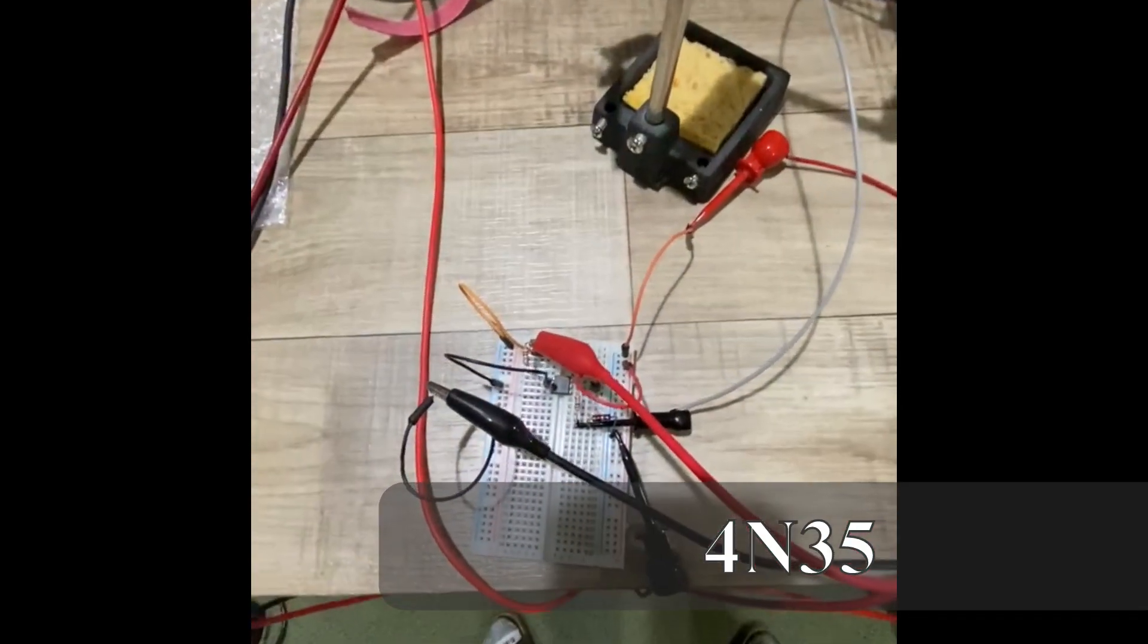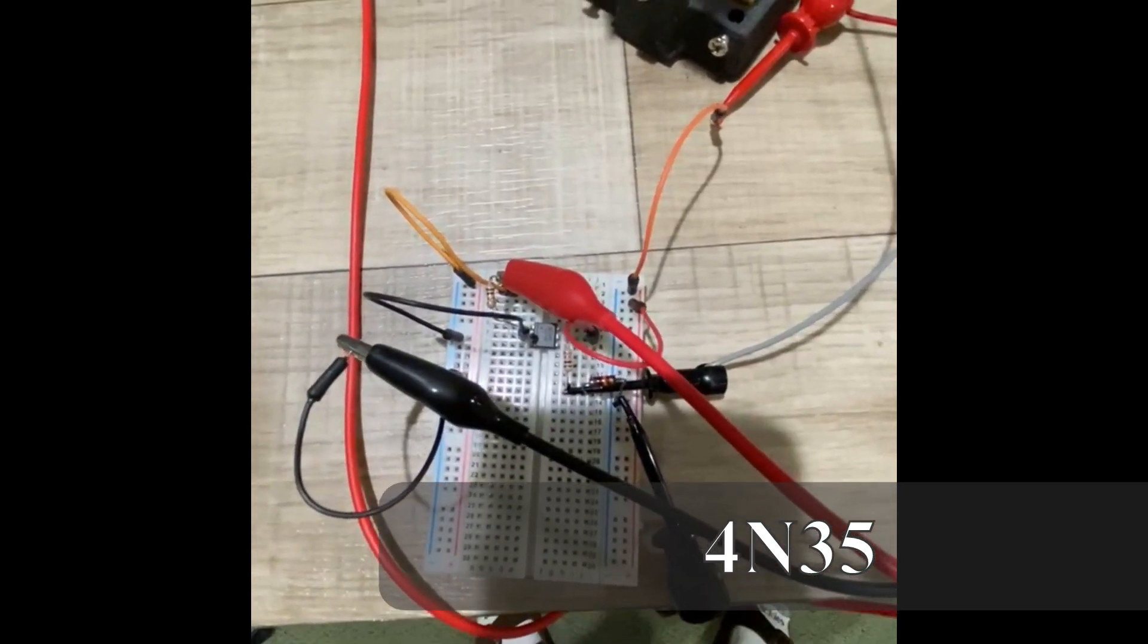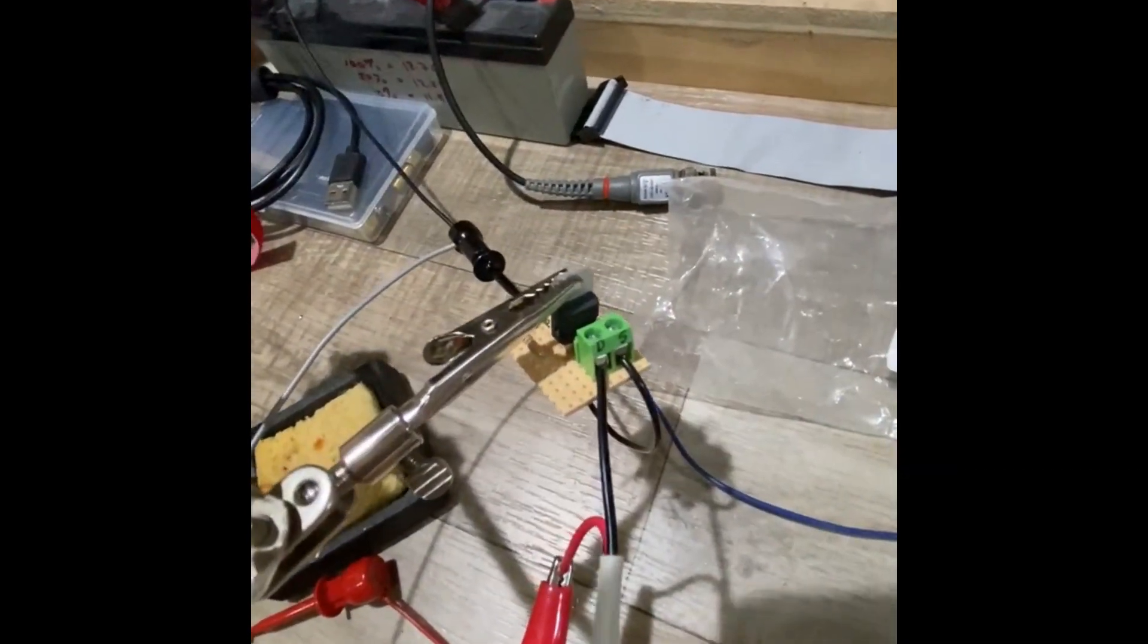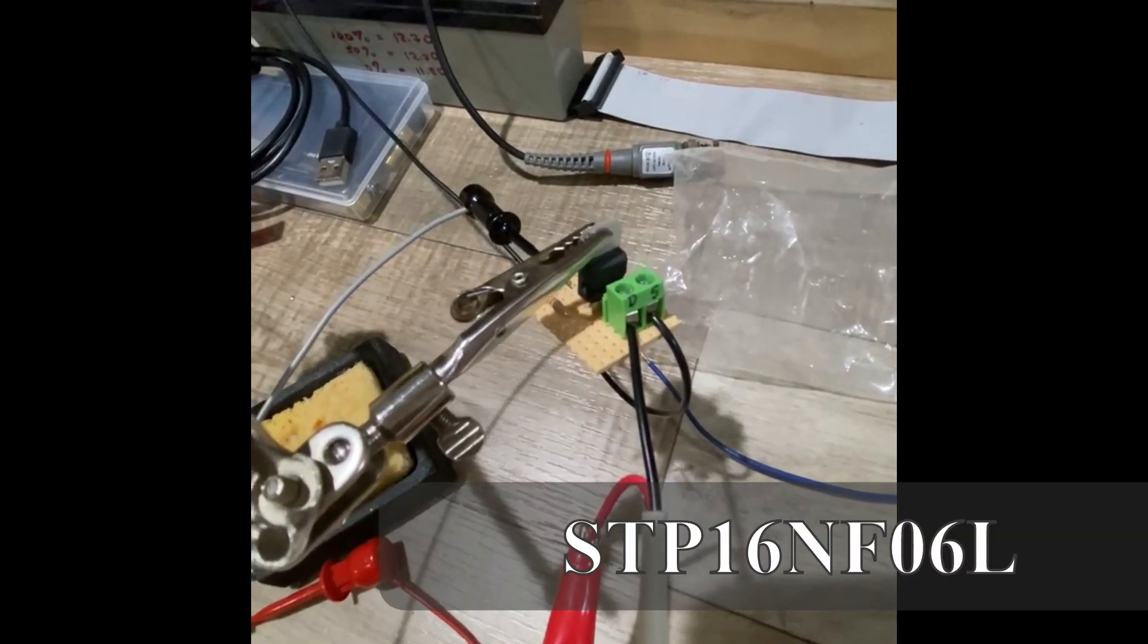I've got an opto isolator here, which is 5 volts on the input side and 12 volts on the output side, which is driving this FET up here. Pretty hefty FET for this application, but why not? I've got a bag full of them.